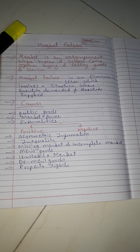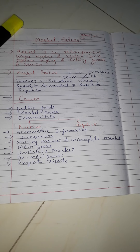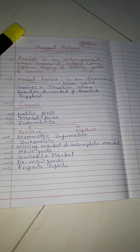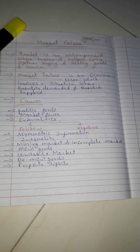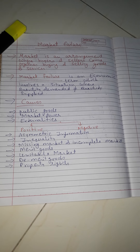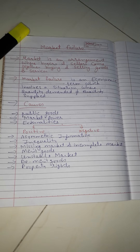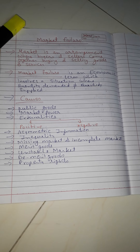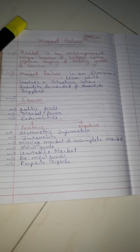The next cause is missing market and incomplete market. It means the firm has all the materials but is not producing goods and services, even though the cost of production is less than what it is getting from the buyer. Missing market means the firm is not producing even though the cost of production is low and buyers are demanding. The reason behind this can be merit goods, public goods, etc. Missing market is also known as incomplete market, and it is considered a form of market failure.